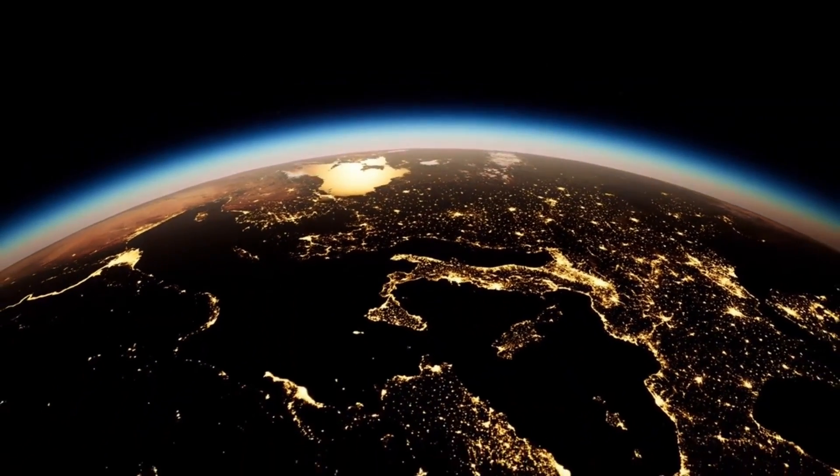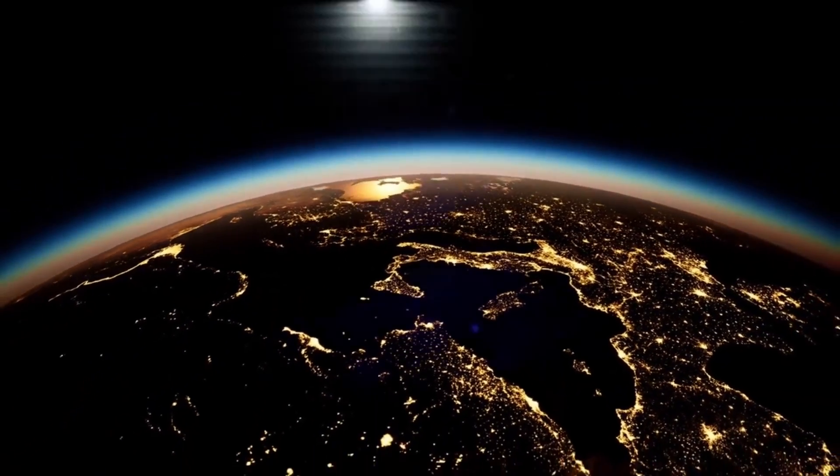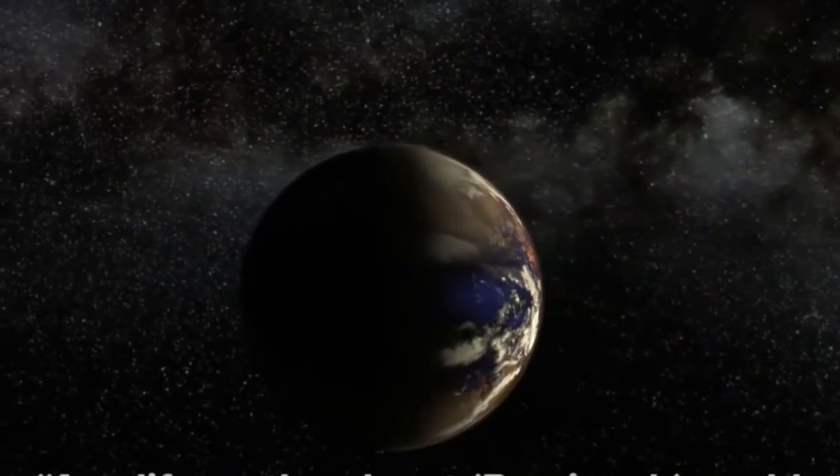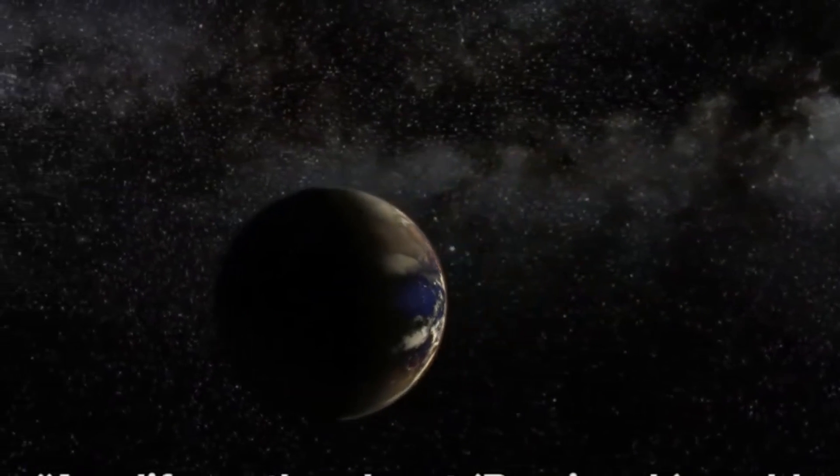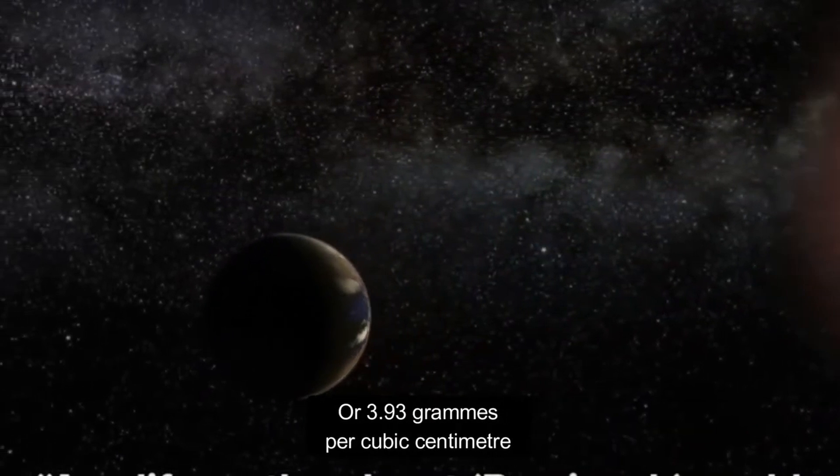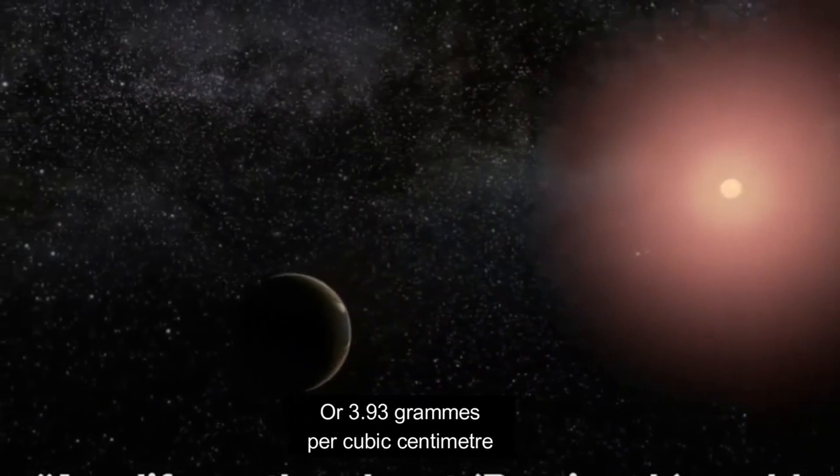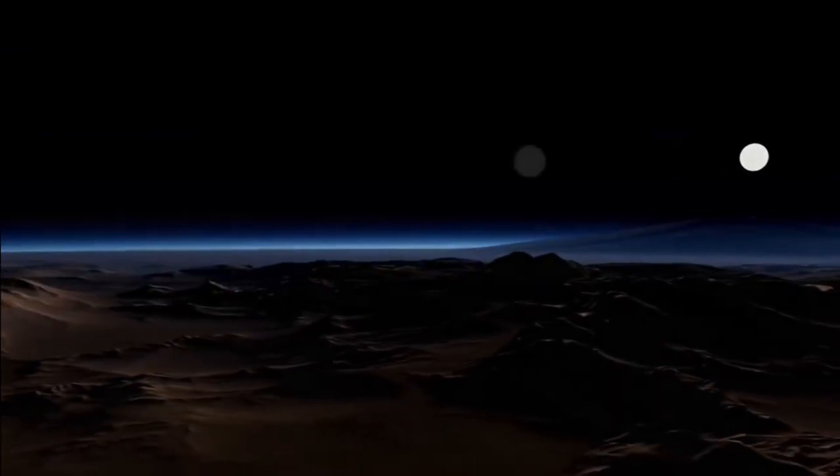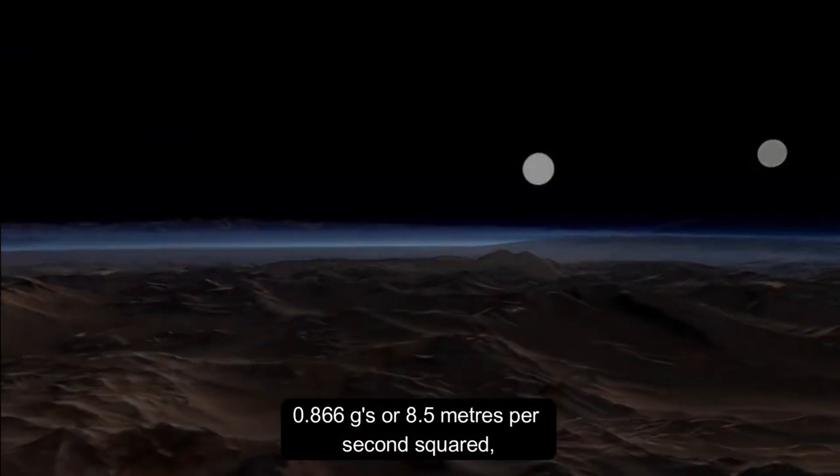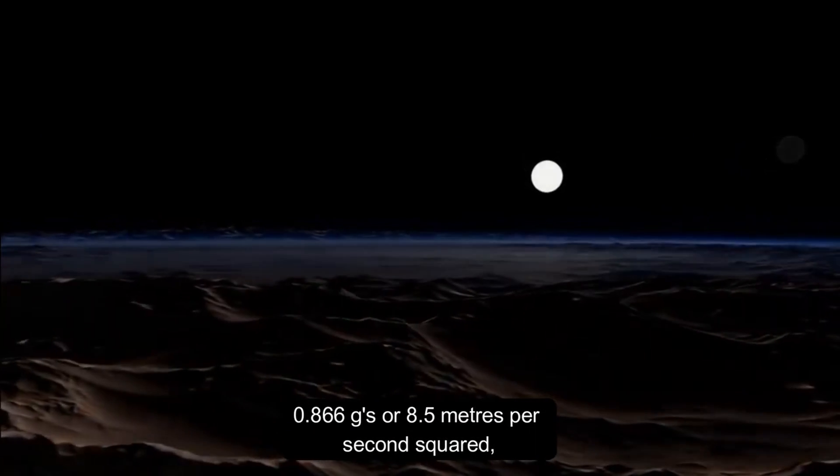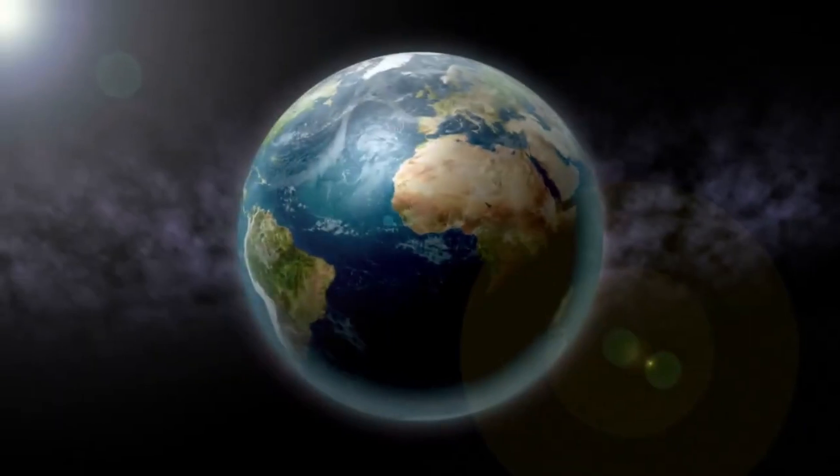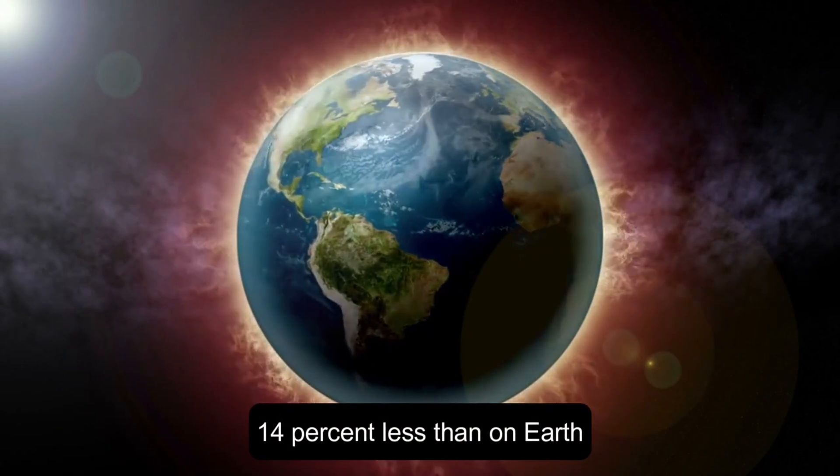However, there is another variable that can significantly alter this calculation. If Proxima b has the same mass density as Mars or 3.93 grams per cubic centimeter, its surface gravity would then be 0.866 g or 8.5 meters per second squared, and you would weigh 14% less than on Earth.